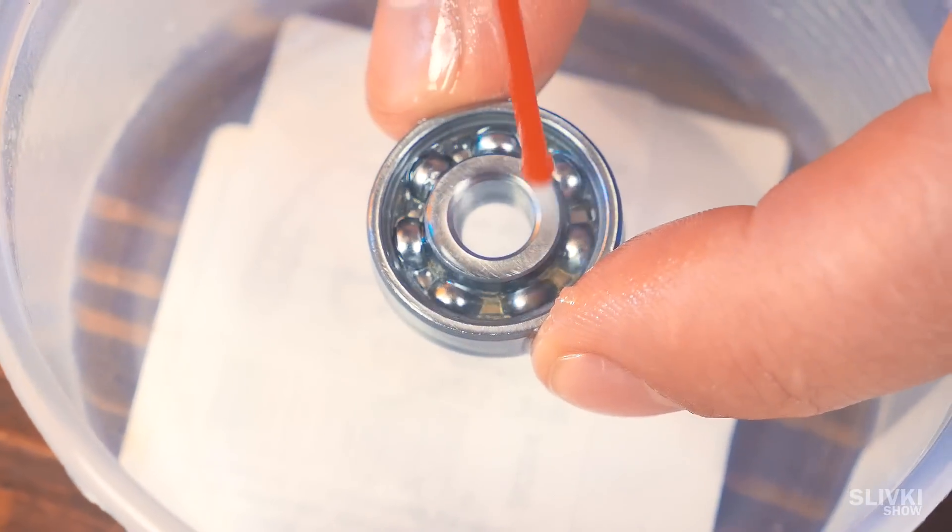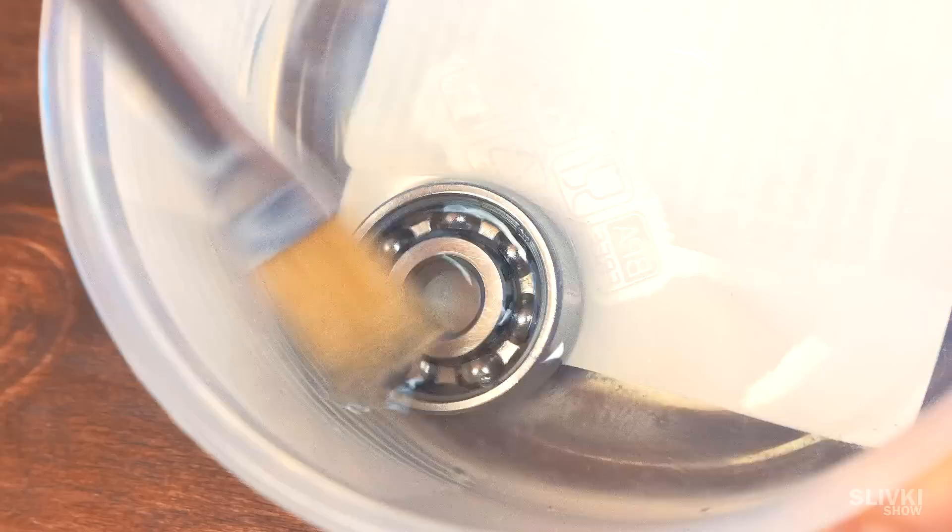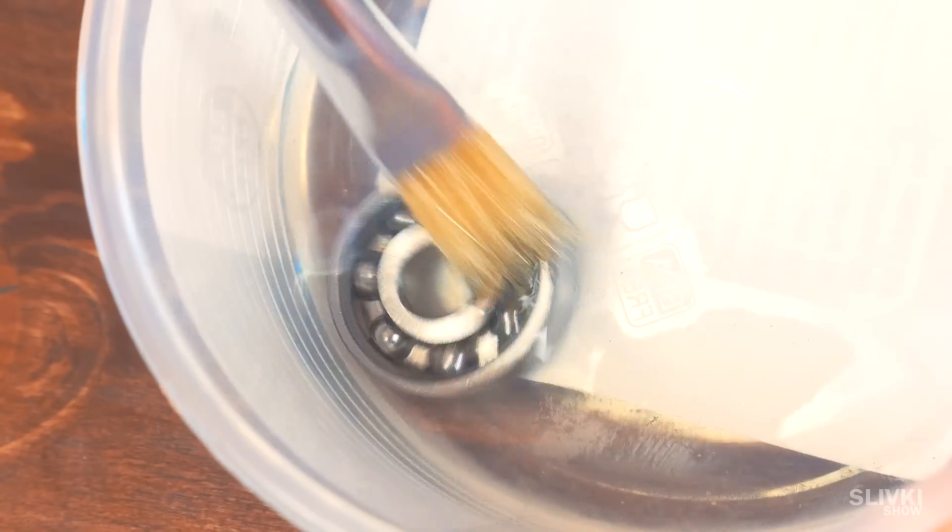For this we can use WD-40, kerosene or solvent. Our task is to get rid of grease from bearing by all means, so it can spin easily.